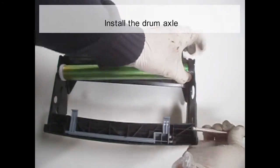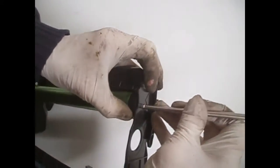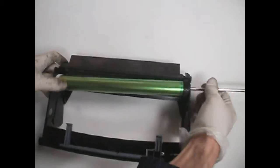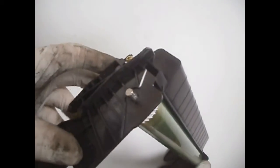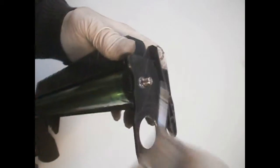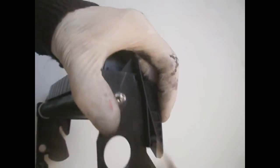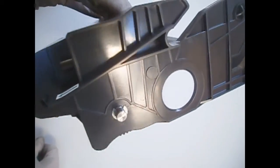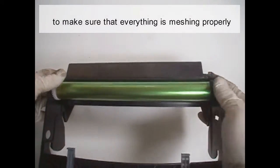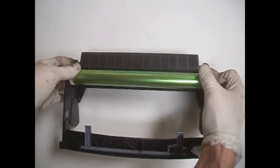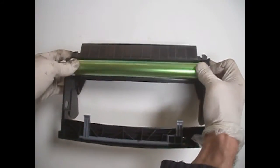Install the drum axle. Install the E-ring. To make sure that everything is meshing properly, rotate the drum by the gear in the proper direction. And the work is done.